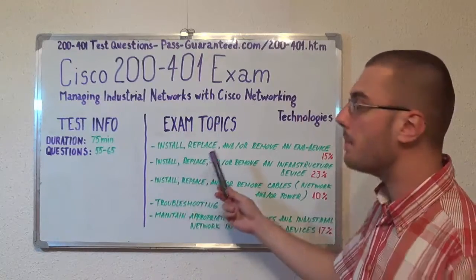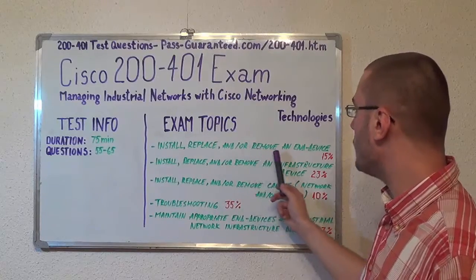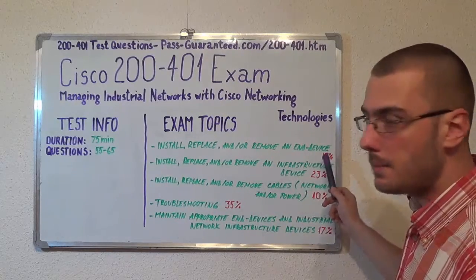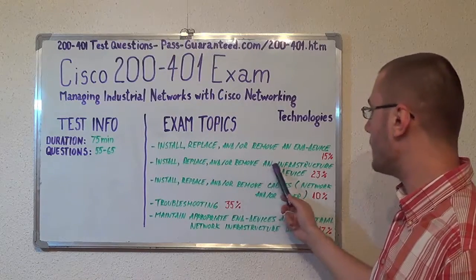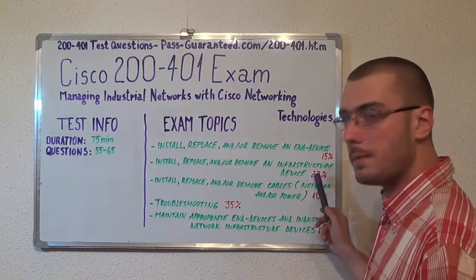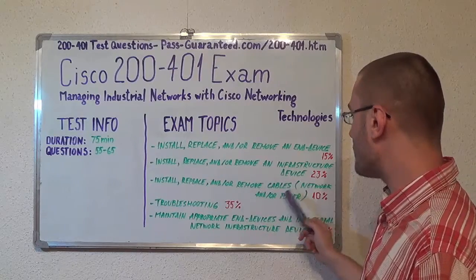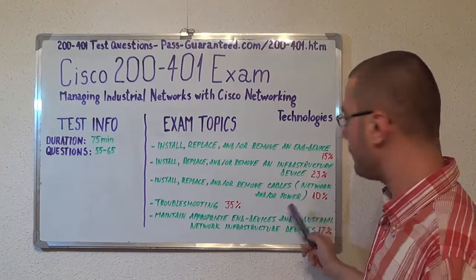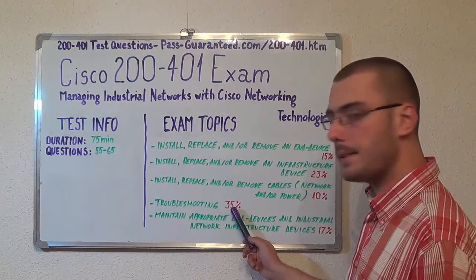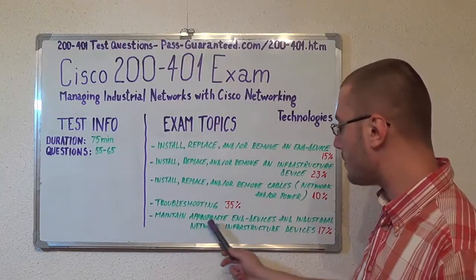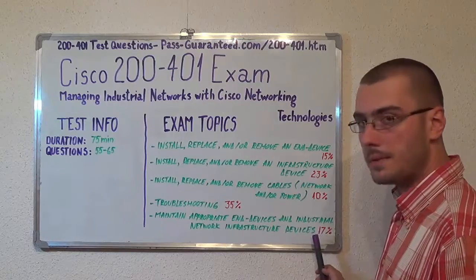Moving on to the exam topics. Firstly, we have Install, Replace and/or Remove an End Device with 15%. Next, Install, Replace and/or Remove an Infrastructure Device with 23%. Install, Replace and/or Remove Cables, Network and/or Power with 10%. Troubleshooting with 35%. And the last one: Maintain Appropriate End Devices and Industrial Network Infrastructure Devices with 17%.